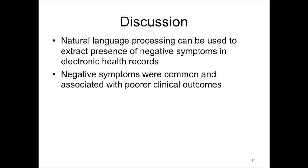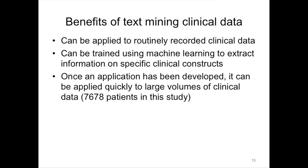This is after adjustment for all of the covariates described earlier. So we can see as a result of this work that natural language processing can be used to extract quite subtle clinical constructs from electronic health records. The negative symptoms we identified were common and were associated with poorer clinical outcomes. But this work goes beyond just negative symptoms and schizophrenia because it can be applied to any routinely recorded clinical data. The machine learning approach allows algorithms to be developed to extract quite subtle clinical constructs in a way which a rule-based approach makes difficult.